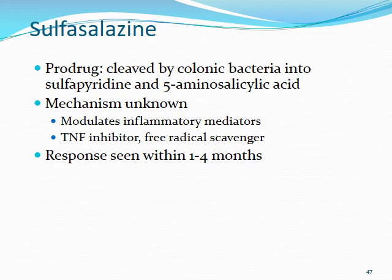Sulfasalazine is another traditional DMARD that also appears in treatment of Crohn's disease and ulcerative colitis. It is a prodrug cleaved by colonic bacteria into sulfapyridine and 5-aminosalicylic acid — a derivative of aspirin. Its mechanism is largely unknown, but it helps modulate inflammatory mediators, inhibits TNF effects, and acts as a free radical scavenger, helping eliminate H2O2 and prevent propagation of cellular damage.